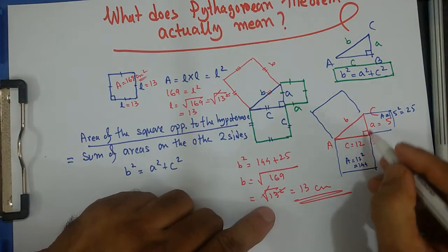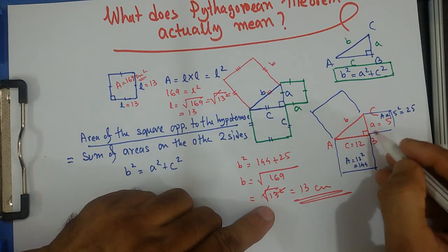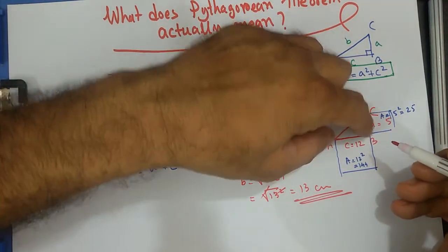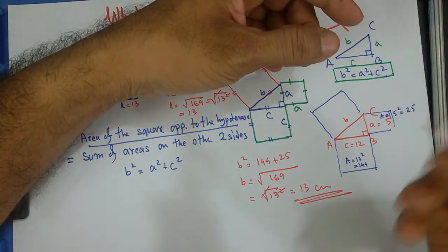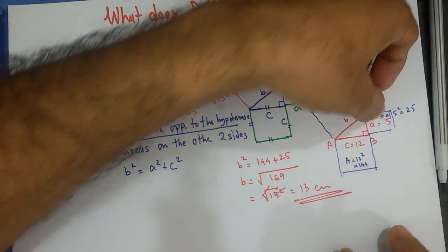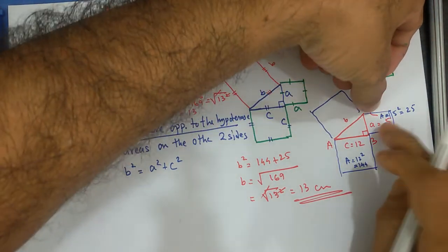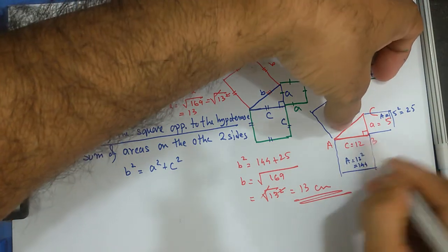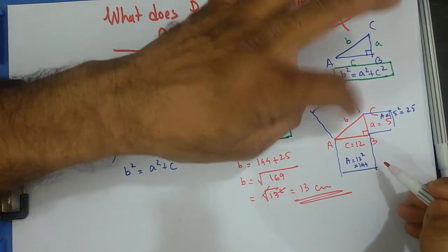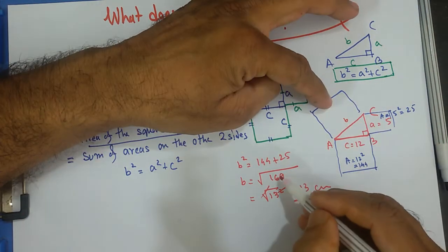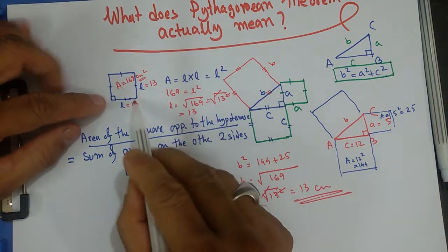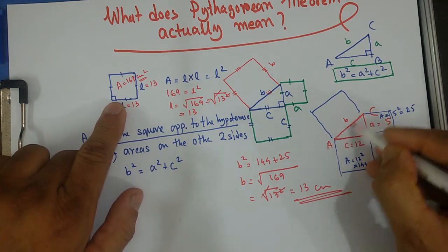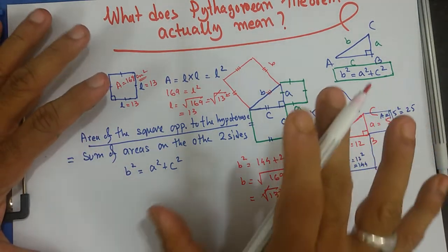So whenever we say a right-angle triangle has two sides — not the hypotenuse — of 5 and 12, we are giving the information that the area of one square is 25 square centimeters and the other is 144. The total area is 169, and its square root gives the length of the hypotenuse — that's what the Pythagorean Theorem actually means.